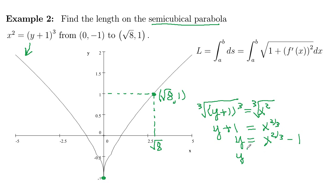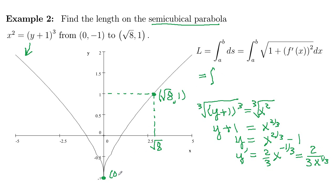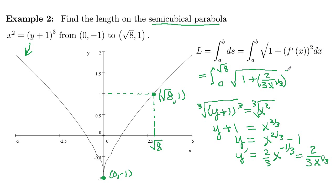So our f prime of x, which is y prime: 2/3 comes down in front, times x, subtract 1 from the exponent giving negative 1/3, and the derivative of negative 1 is 0. So this is 2/3 times x to the negative 1/3, or 2 over 3 times the cube root of x. That's what goes into the arc length formula. The integral will be from x equals 0 to x equals √8, of the square root of 1 plus (2/3 · x^(1/3)) squared, dx.